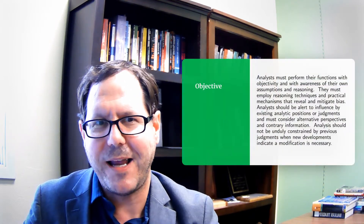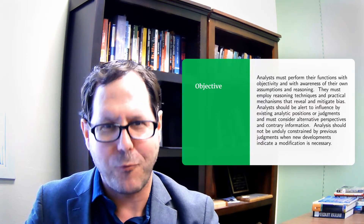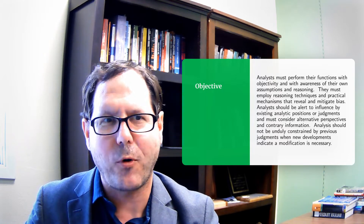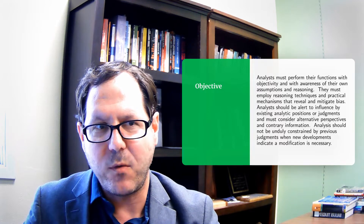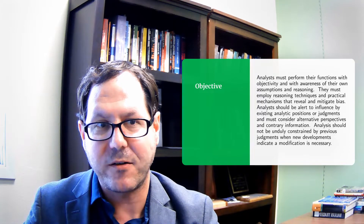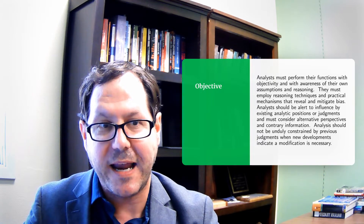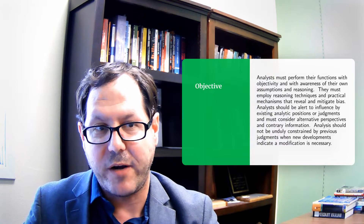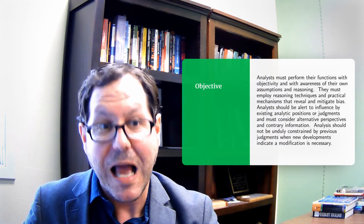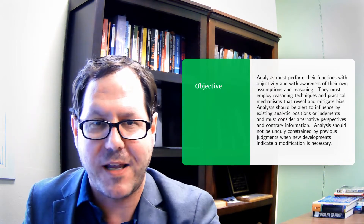The first standard laid out in ICD-203 is that analysis should be objective. I'll read the exact wording because it's important. Analysts must perform their functions with objectivity and with awareness of their own assumptions and reasoning. They must employ reasoning techniques and practical mechanisms that reveal and mitigate bias. Analysts should be alert to the influence of existing analytic positions or judgments and must consider alternative perspectives and contrary information. Analysis should not be unduly constrained by previous judgments when new developments indicate a modification is necessary.